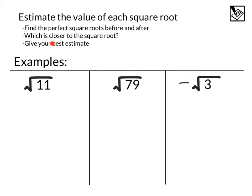So we're going to do the same thing as before, find the perfect square roots before and after. Then we're going to ask ourselves, which is closer to the square root, and kind of give our best estimate from there.